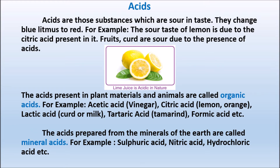The acid present in plant materials and animals is called organic acid. Organic acids derived from plant materials and animals: acetic acid (vinegar), citric acid (lemon, orange), lactic acid (curd, milk), tartaric acid (tamarind), formic acid - all are organic acids. They are present in plant materials and animals. All are weak acids.